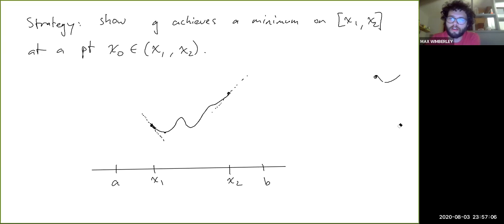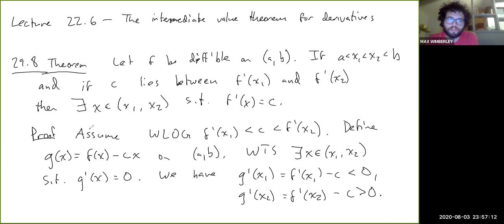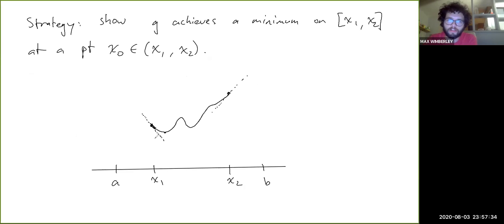So it's really specifically the fact that the derivative here is negative and the derivative here is positive that lets us find a minimum in between. To drive this home, we're assuming f'(x₁) is less than c less than f'(x₂). The other case would be f'(x₁) greater than c greater than f'(x₂). If that was the case, when we formed g we would find g'(x₁) would be positive and g'(x₂) would be negative. Then we would actually be able to find a maximum, not a minimum.